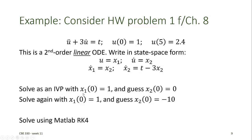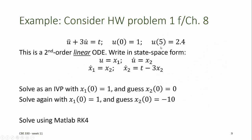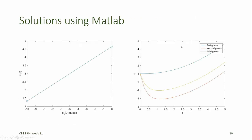First, we'll solve this as an initial value problem using two boundary conditions at the left side of the domain. The first boundary condition is known, and the second is a guess. We'll guess that the initial slope of u equals 0. We'll solve it again using the known boundary condition for x1 and a different initial guess for x2, assuming the initial slope is minus 10. We solve the IVP using these two sets of initial conditions with the Runge-Kutta 4 method in MATLAB. The solution using our first guess is shown in blue: the initial value of u is 1 and the initial slope is 0. This overshoots our boundary condition at the right-hand end — u at 5 is supposed to equal 2.4, but we find u at 5 is some value between 4 and 5.